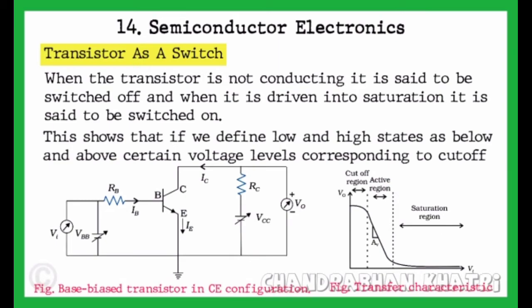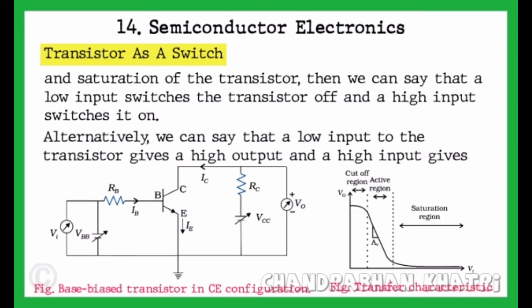This shows that if we define low and high states as below and above certain voltage levels corresponding to cutoff and saturation of the transistor, then we can say that a low input switches the transistor off and a high input switches it on. Alternatively, we can say that a low input to the transistor gives a high output and a high input gives a low output.